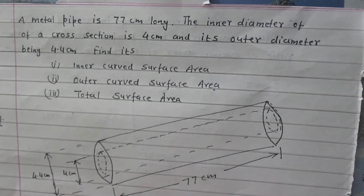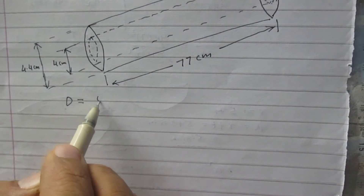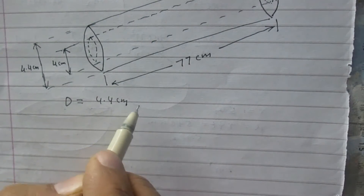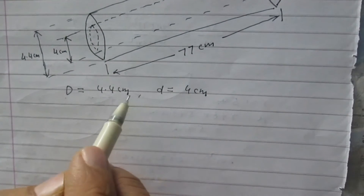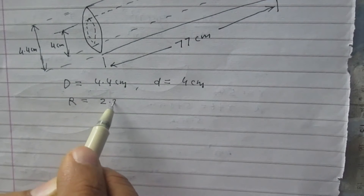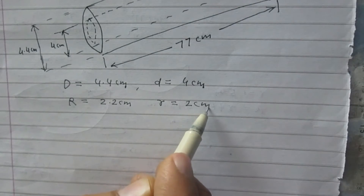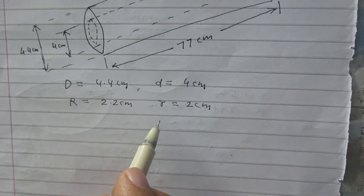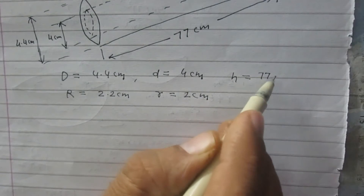We are given a hollow pipe, a metal pipe which is a hollow cylinder. The outer diameter of the base of this pipe is 4.4 cm and the inner diameter is 4 cm. Since radius is half of the diameter, the outer radius is 2.2 cm and the inner radius is 2 cm. The length of the pipe is 77 cm, so the height of the cylinder is 77 cm.